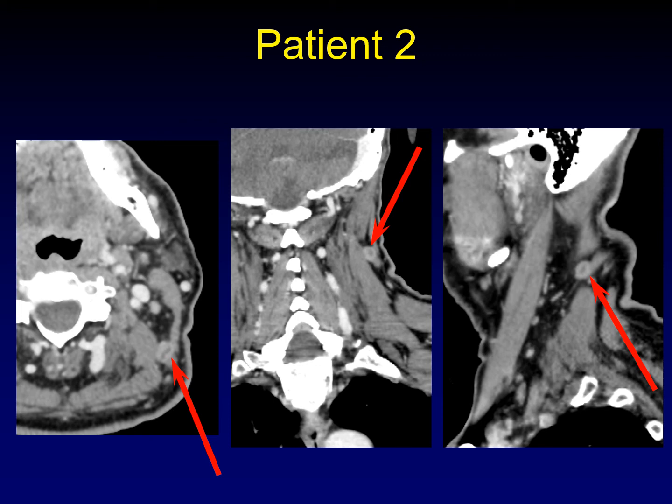It doesn't meet size criteria by any one standard. That's why size criteria is not a great criterion — it's not a great way to judge nodes. True central necrosis will trump size criteria every single time.